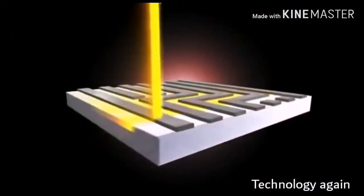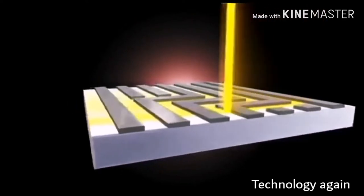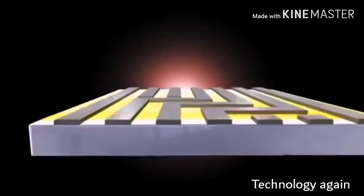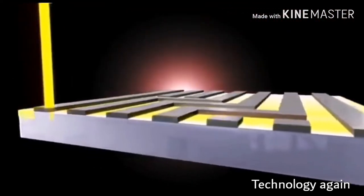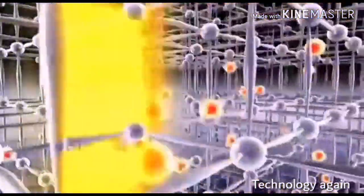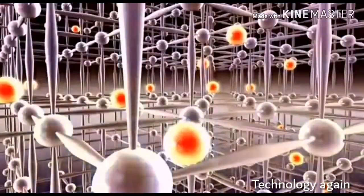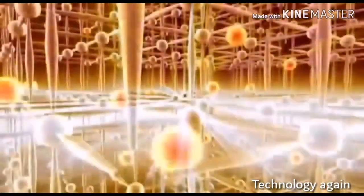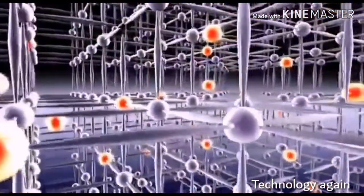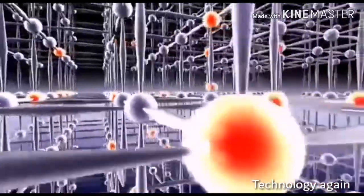First, dopant atoms are injected into the silicon structures. These atoms then distribute randomly in the silicon lattice. At high temperatures, the doping atoms become flexible and take on a fixed position in the atomic structure.